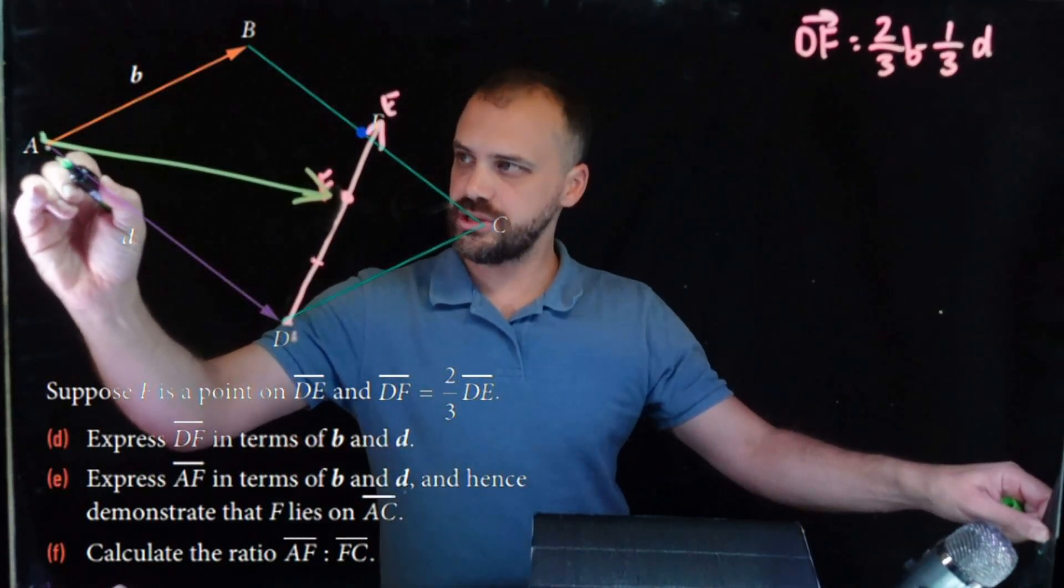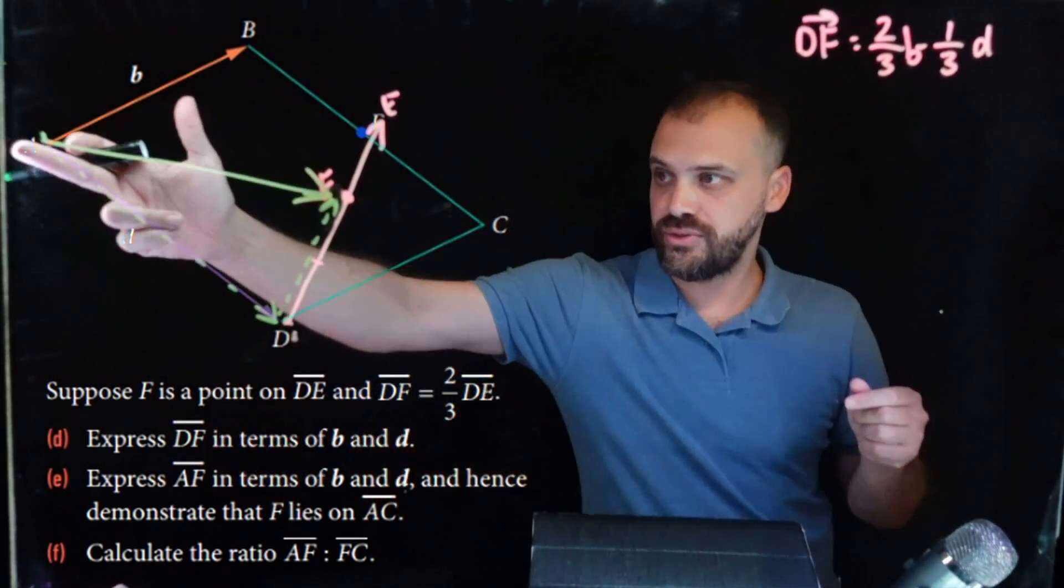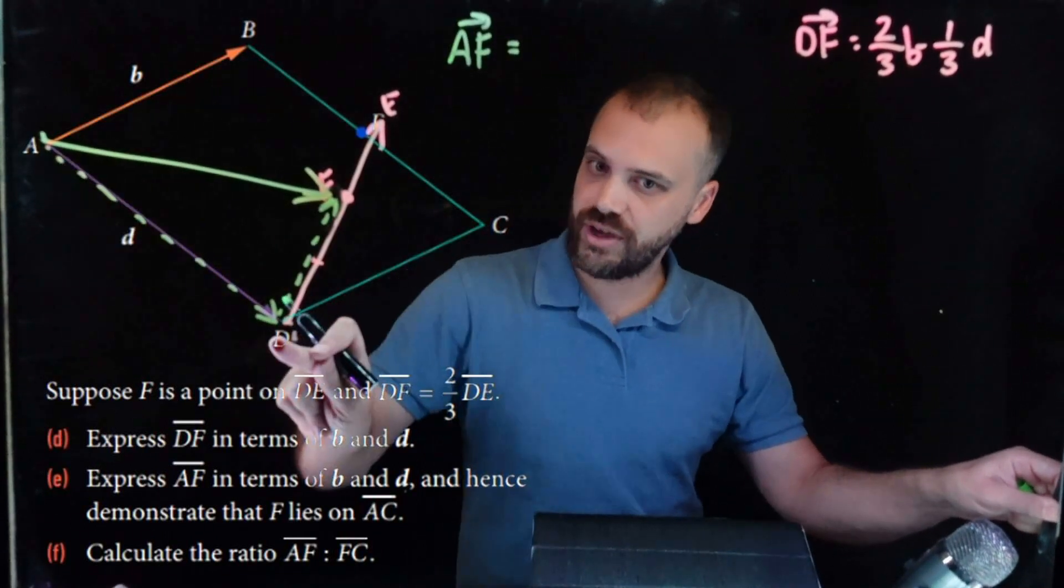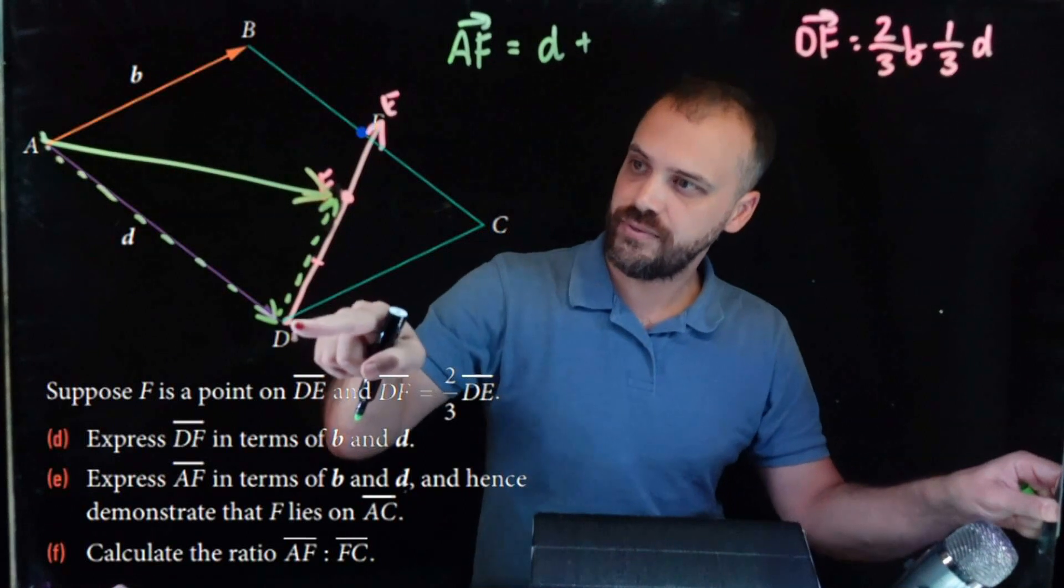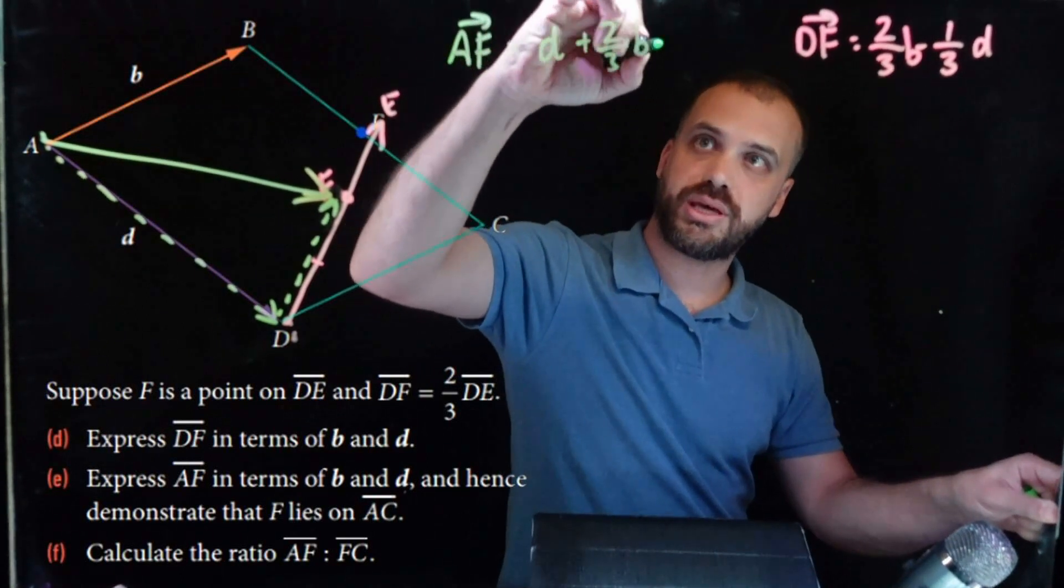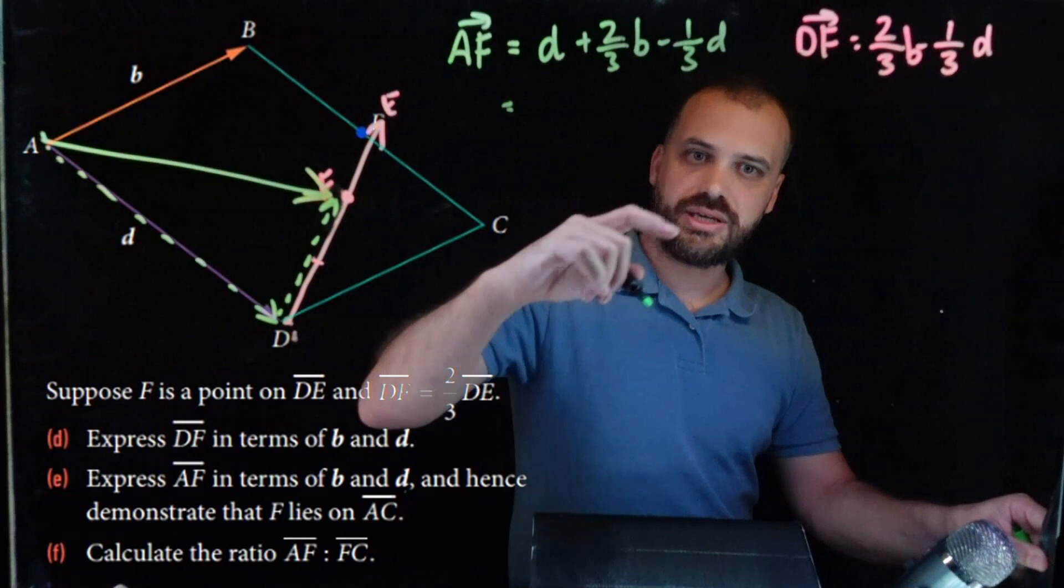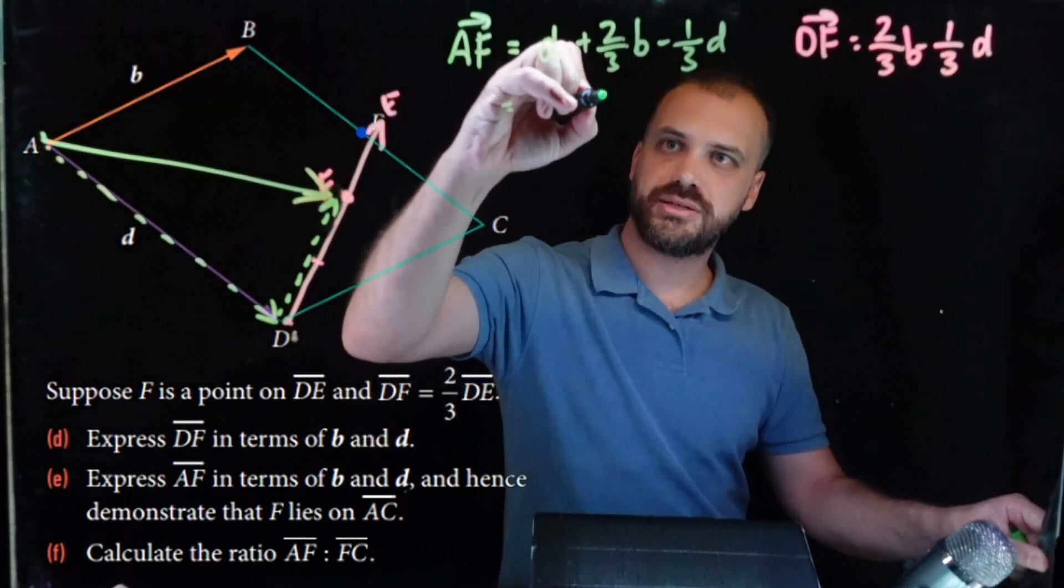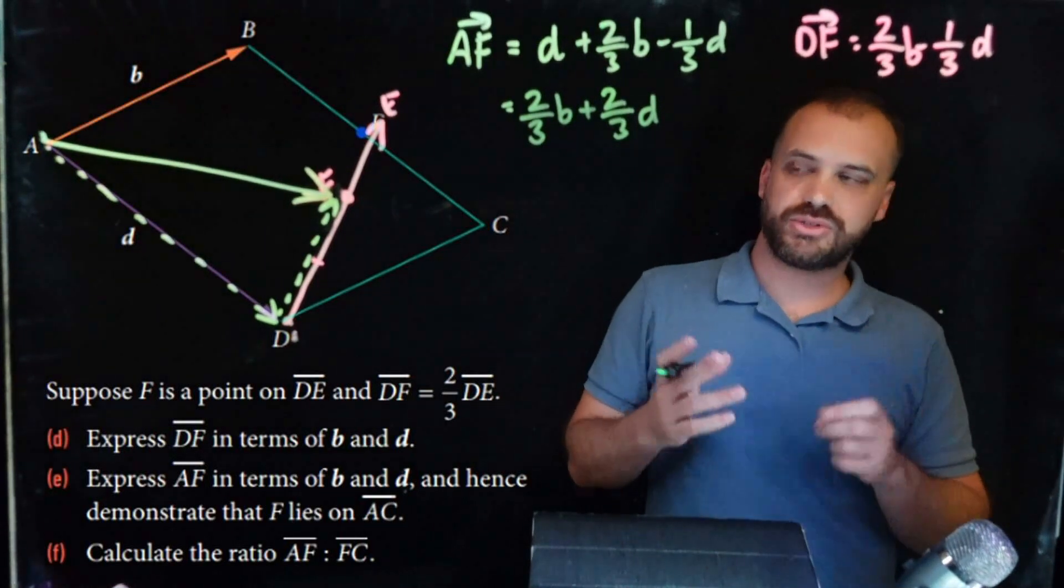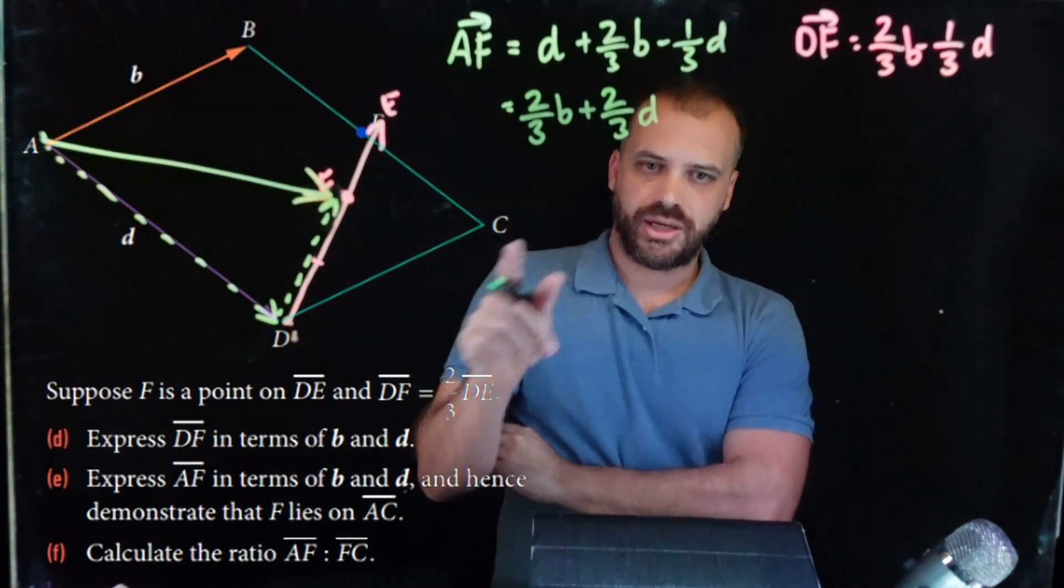Make sure you write it as a vector, it's an arrow, vector AF in terms of B and D. So, one way to do that would be to go along this line here, a vector, along this line here, a vector, and this plus this equals that. So, that means that AF is equal to this vector here, which is just D plus this vector here, which is DF, and we know exactly what that is. Two-thirds B minus one-third D. That's equal to D minus one-third D, which is two-thirds D, and two-thirds B. Two-thirds B plus two-thirds D.